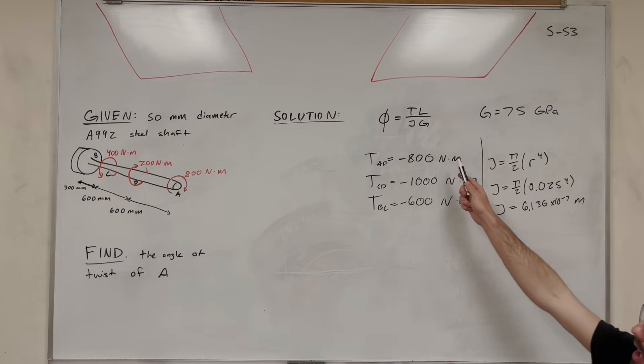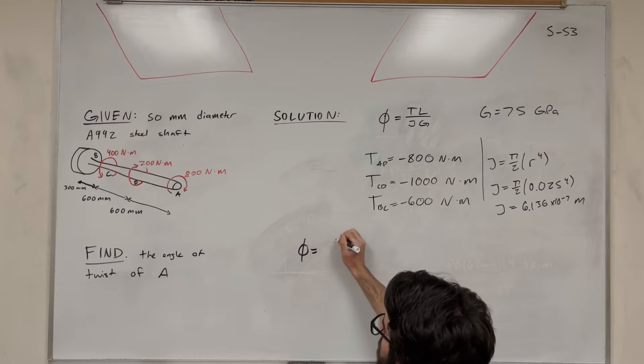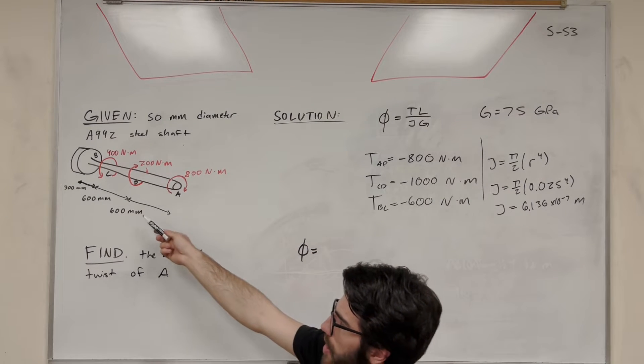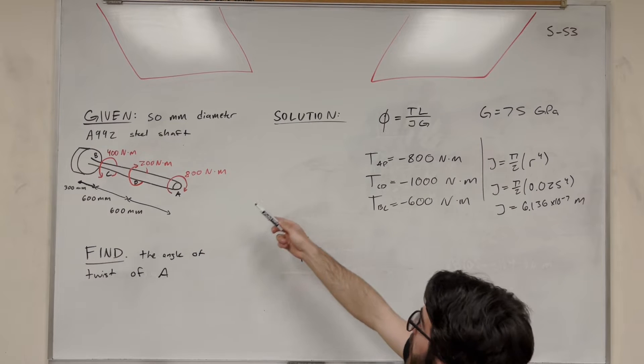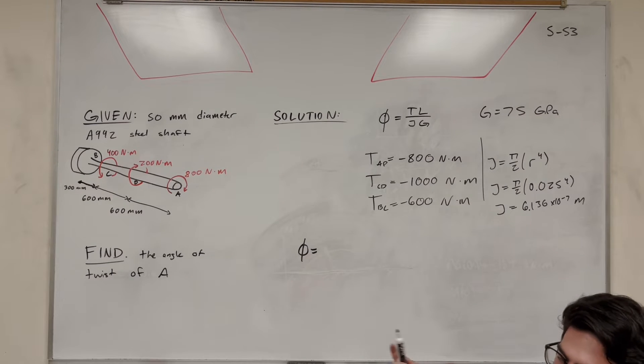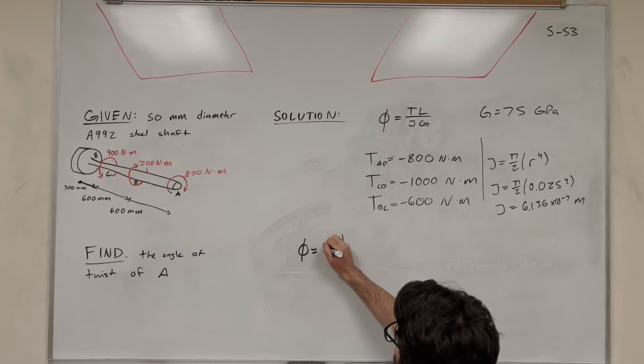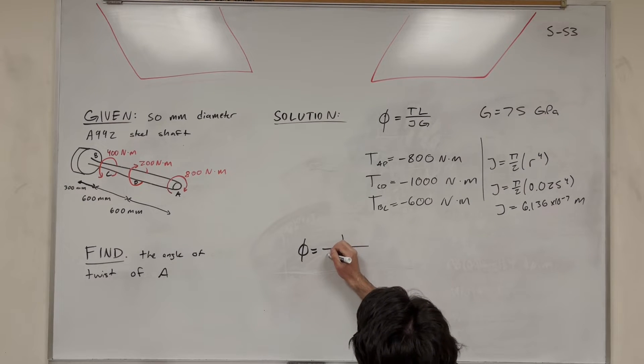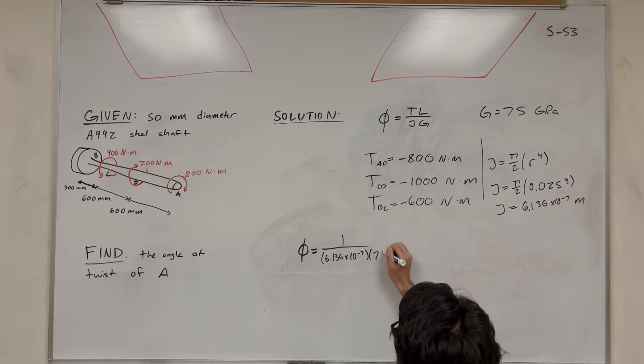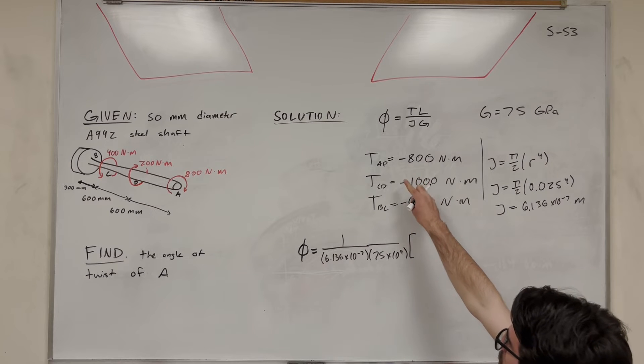So again, we're going to be adding out TL over JG for each one of the three segments. So what we want to do first is to factor out everything that's going to be the same. So the lengths are different for each one of these, so we can't factor that out. The torque is different for each one of these. But the polar moment of inertia is going to be the same for each one of them because they're the same diameter. And the G is going to be the same because they're the same material. So let's factor out that JG. So let's do 6.136 times 10 to the negative 7th. And then G, 75 times 10 to the 9th. So we factored that out.